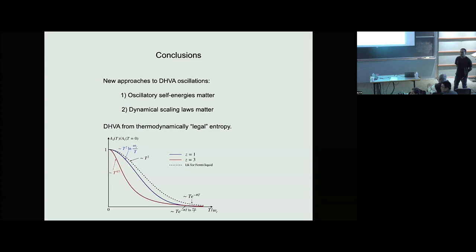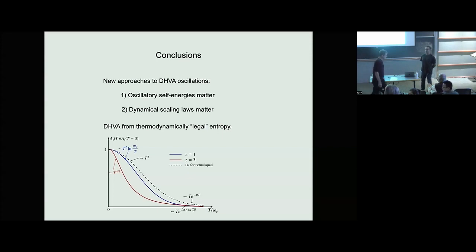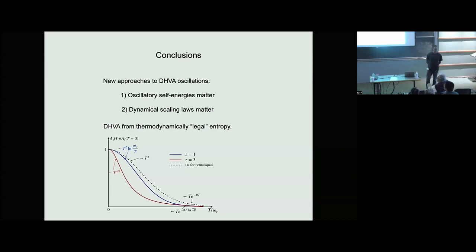You talked about how the temperature dependence changes — but how about the amplitude of the oscillations and the frequency? The frequency has to satisfy flux quantization and Onsager's principle. What enters is the area of the orbit, not the mass. The mass doesn't enter the frequency; it's just K_F, so it's all the same.